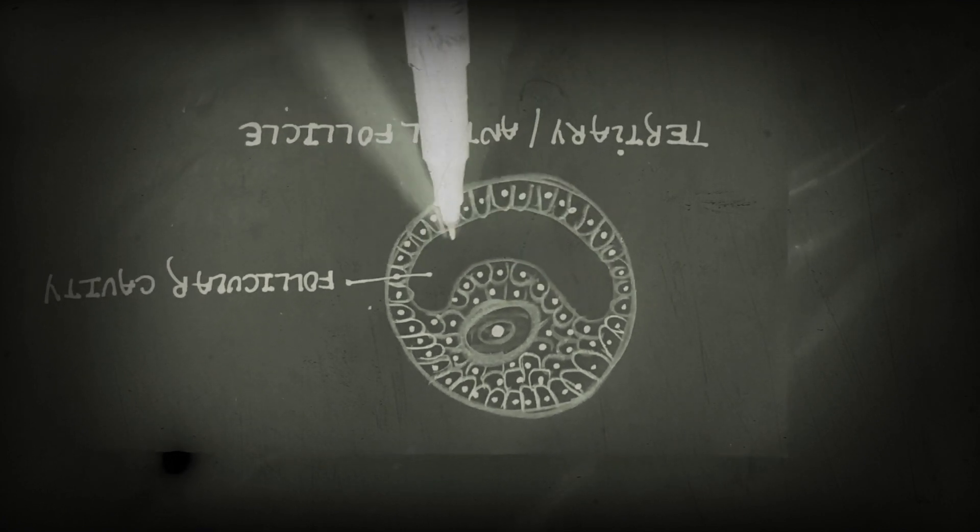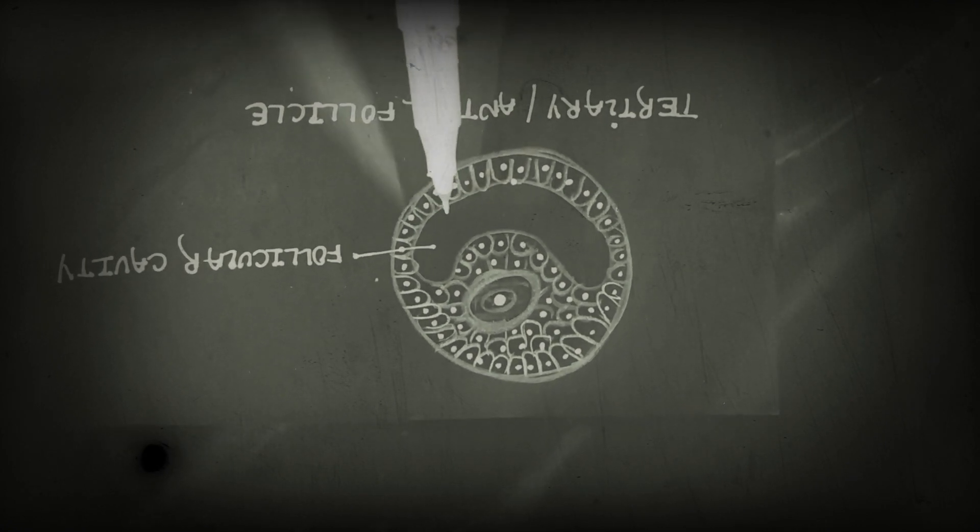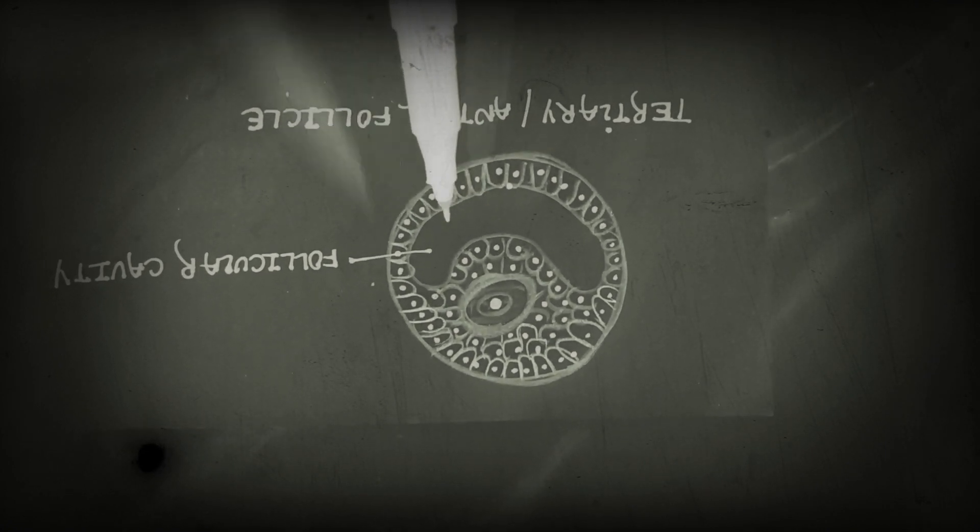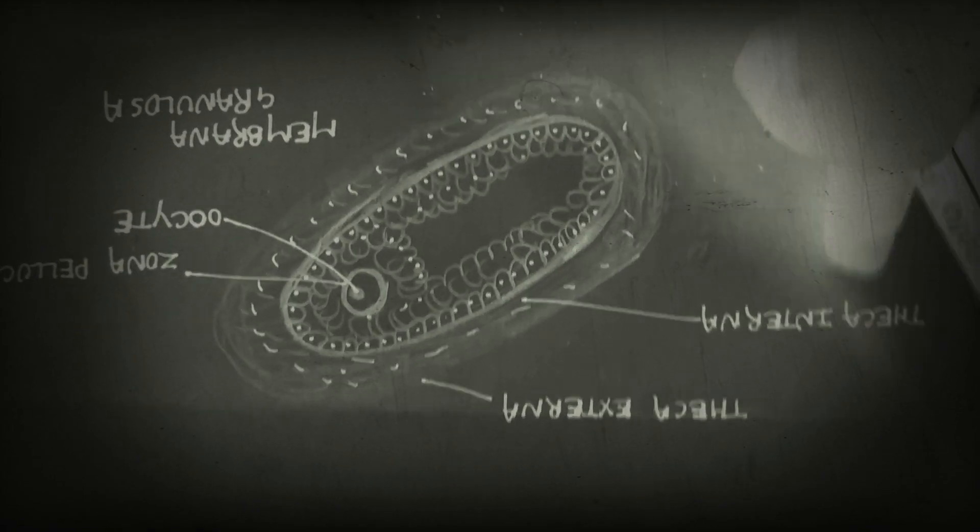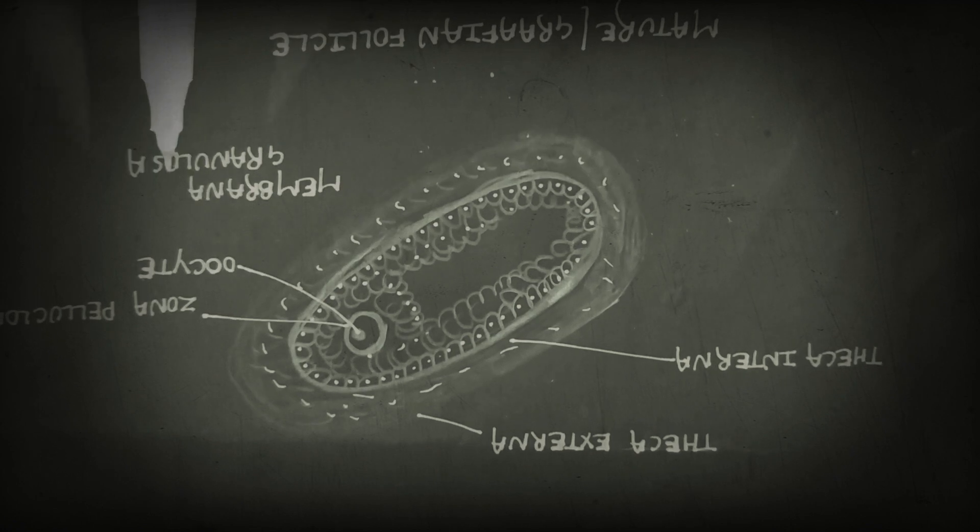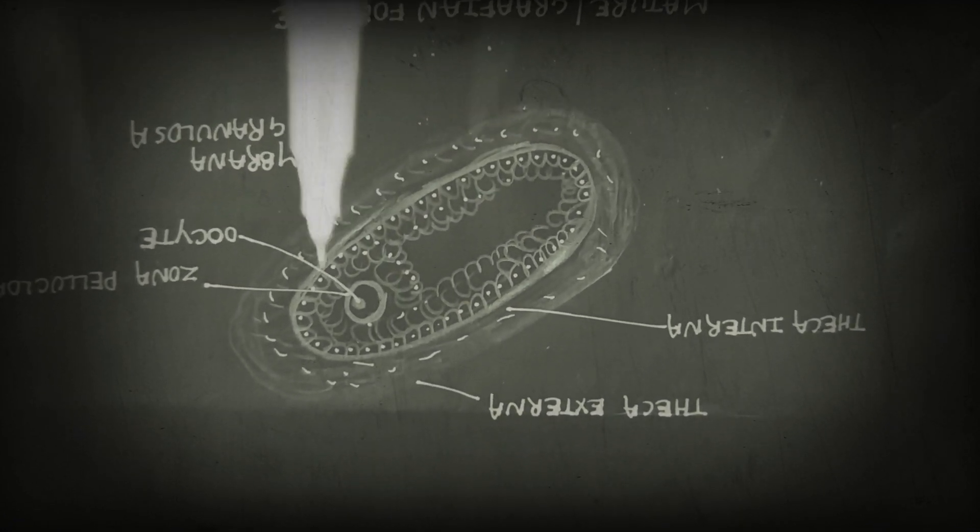The antrum, or follicular cavity, gives antral follicles their name. When our antral or tertiary follicles undergo maturation through rapid divisions, they become Graafian follicles, which are our mature follicles.